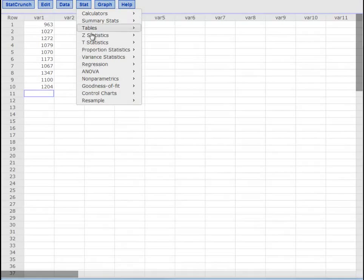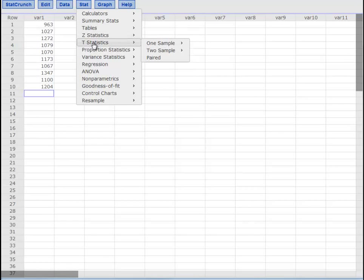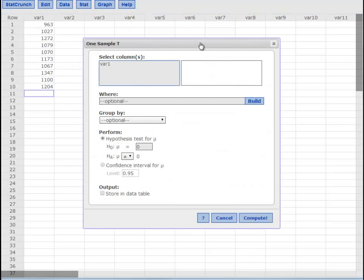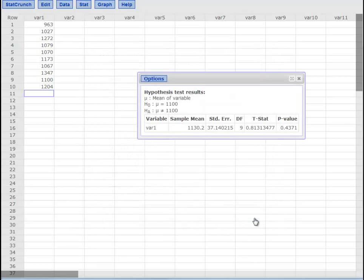Stat. Again, are we doing t's or z's? We're doing t's because we don't know the standard deviation of the population. One sample this time with data. Variable 1. We're testing against it being equal to 1100 and not being equal to 1100. Compute. There's our p value. There's our test statistic.